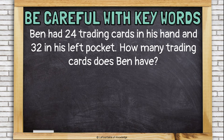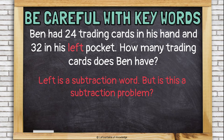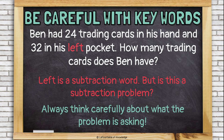Here's another. Ben had 24 trading cards in his hand and 32 in his left pocket. How many trading cards does Ben have? I see the word 'left,' and left is a subtraction word — but is this a subtraction problem? Once again, we have to think carefully about what the problem is asking. He has some cards in his hand and some cards in his pocket. This is a different type of 'left' entirely. This doesn't mean left like remain or what's left over — it means left like the opposite of right. So we can't just look at the word 'left' and say subtraction. We actually need to add here, putting the number of cards in his hand together with the number of cards in his pocket to figure out how many cards he has. This is a trick keyword.